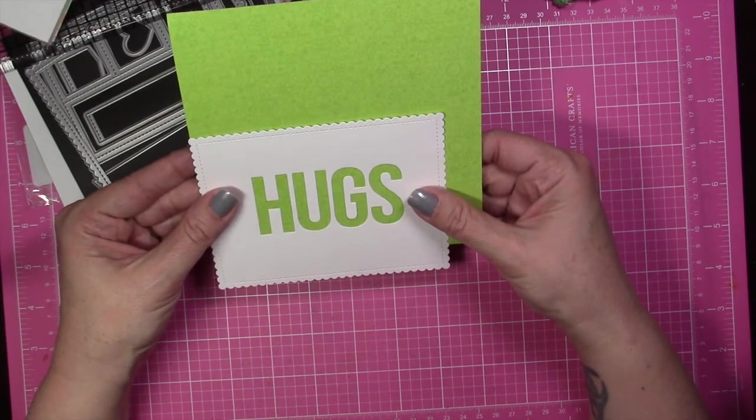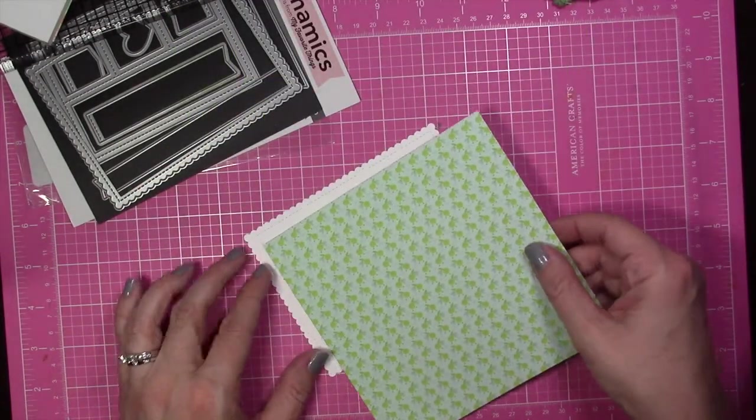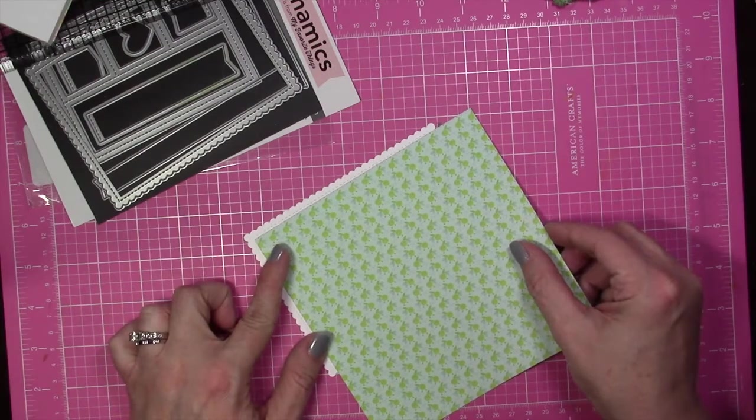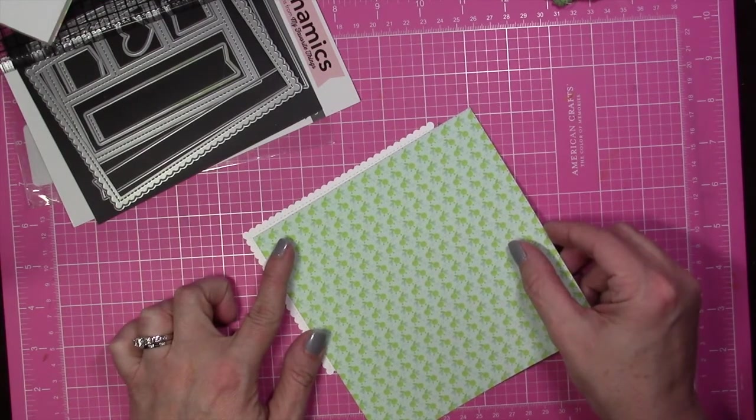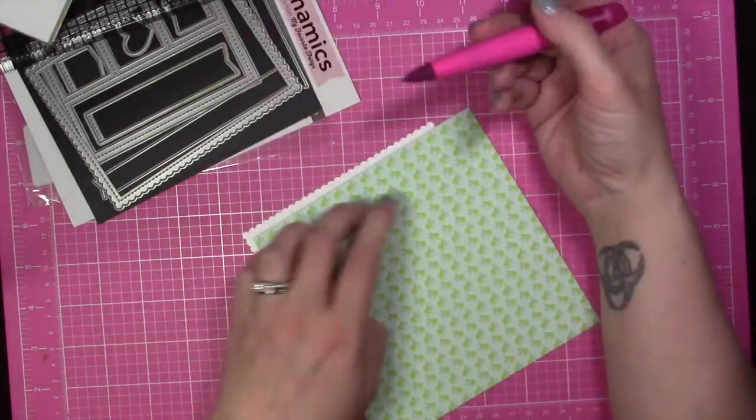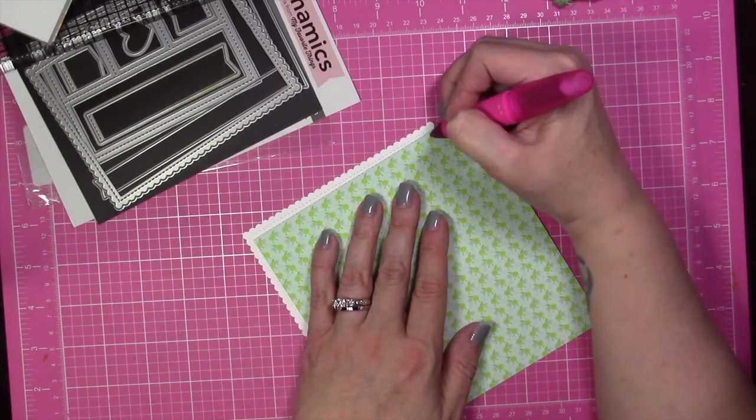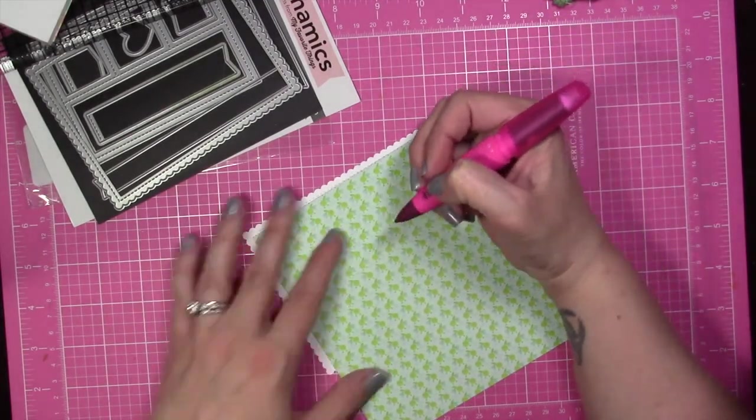You could also make this a shaker card by adding some foam adhesive and lifting that panel up and putting some sequins and stuff behind it. That would be kind of cute too. But for today I'm just going to adhere it directly down to the panel.